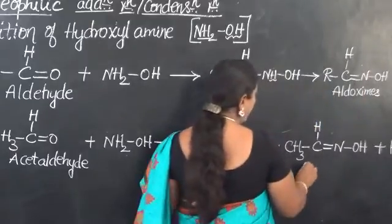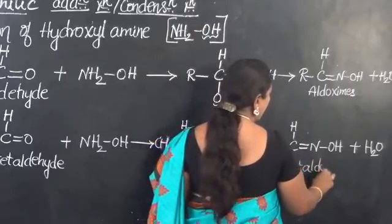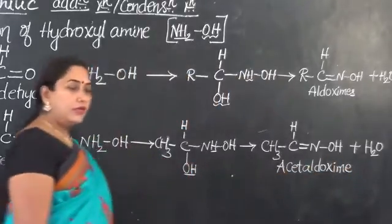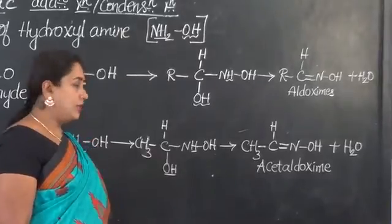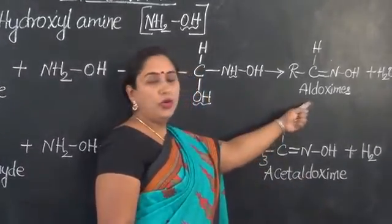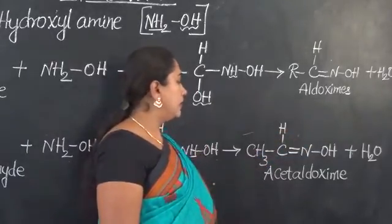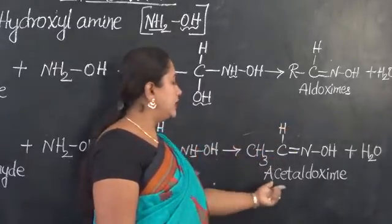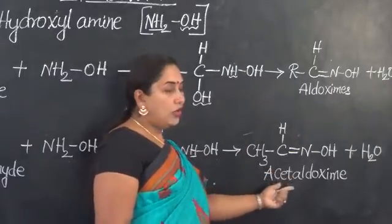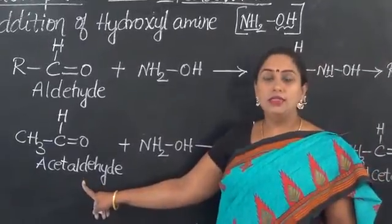The name of this compound is acetaldoxime, because it is obtained from acetaldehyde. Aldoxime is the general name for oximes obtained from aldehydes. The specific name acetaldoxime indicates that this is the aldoxime obtained from acetaldehyde as the starting material.